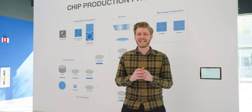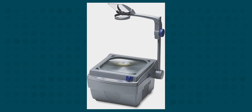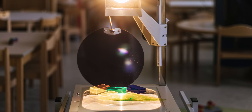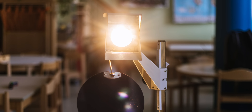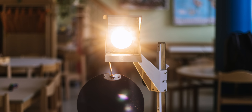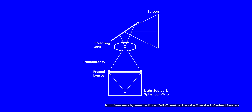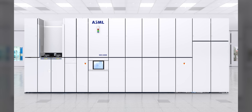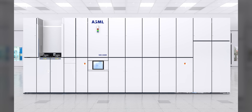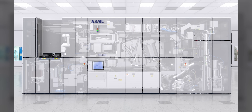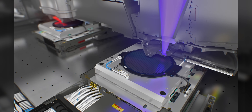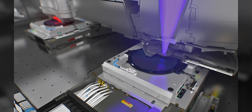The whole process is kind of like a big overhead projector from school. There's a light source that goes through the image that you want to project, and then there are some mirrors and lenses that make sure everything arrives on the screen in focus. The only difference is that for lithography, the light source is one of the world's most powerful lasers and the screen is silicon.